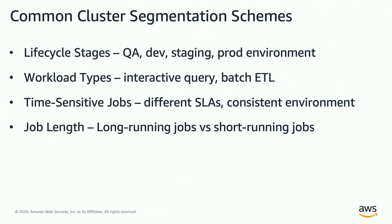You can also segment by job duration. Some jobs are long-running — for example, streaming jobs that continuously run on the cluster. Others are short-running jobs that take just a couple of minutes and finish. You can have one persistent cluster focusing mainly on long-running jobs such as streaming or NoSQL workloads on EMR, and a separate short-running cluster that spins up when data is ready, runs some ETL or short jobs, and terminates once finished.